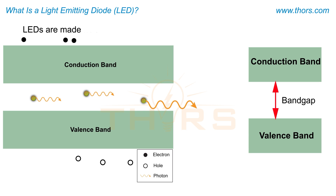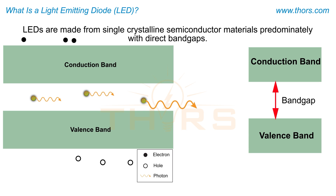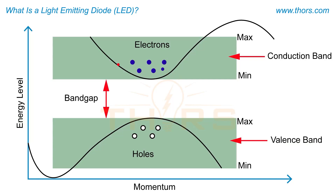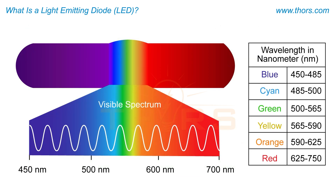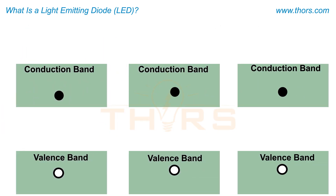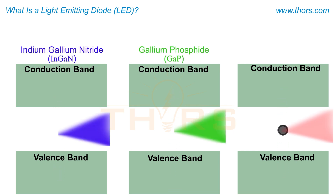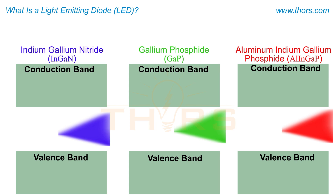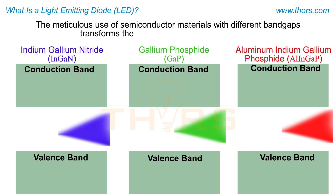LEDs are made from single crystalline semiconductor materials, predominantly with direct band gaps. Direct band gap materials have two energy levels directly above each other with energies corresponding to near-infrared, visible, or near-ultraviolet light. Generally, compound semiconductor materials are used in fabricating LEDs, and the composition of these materials is modified to achieve a wide range of colors. The meticulous use of semiconductor materials with different band gaps transforms the LED into more than just a diode.